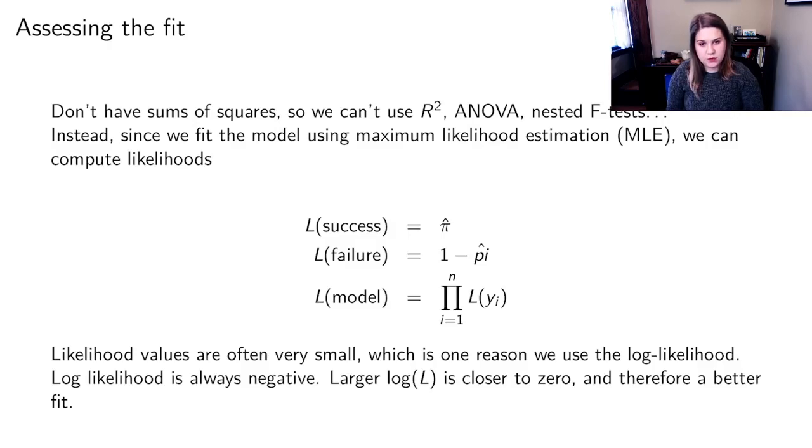But the model was fit using maximum likelihood estimation and so we can compute a bunch of likelihoods. So the likelihood of success, that is the fitted probability of success, π̂. The likelihood of failure is 1 minus π̂. And then if we wanted to think about the likelihood of the model, it would be the product from i equal 1 to n of the likelihood for a particular y_i. So we can have likelihoods for a number of different things.